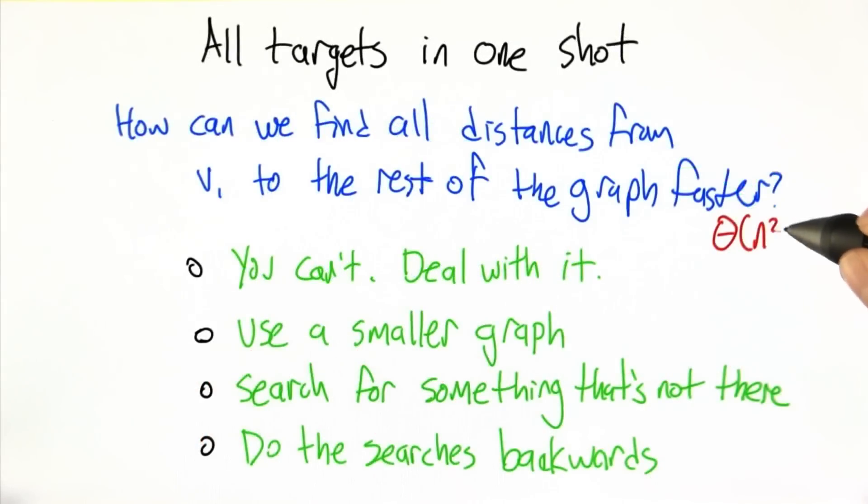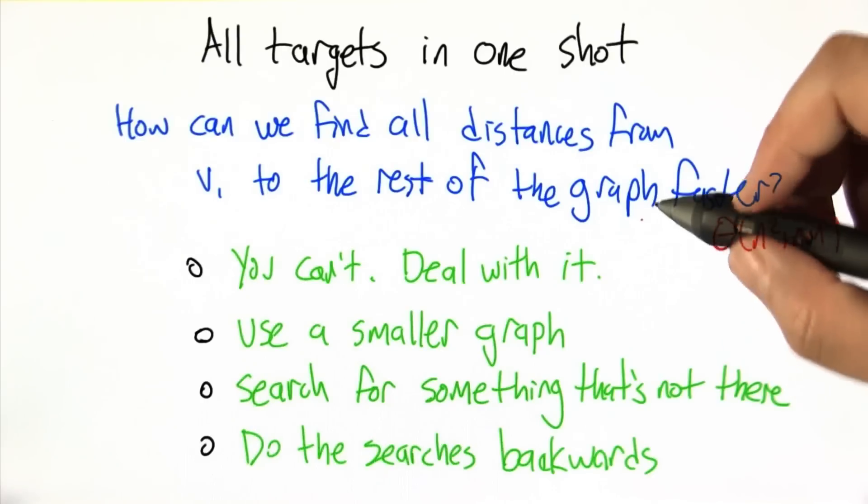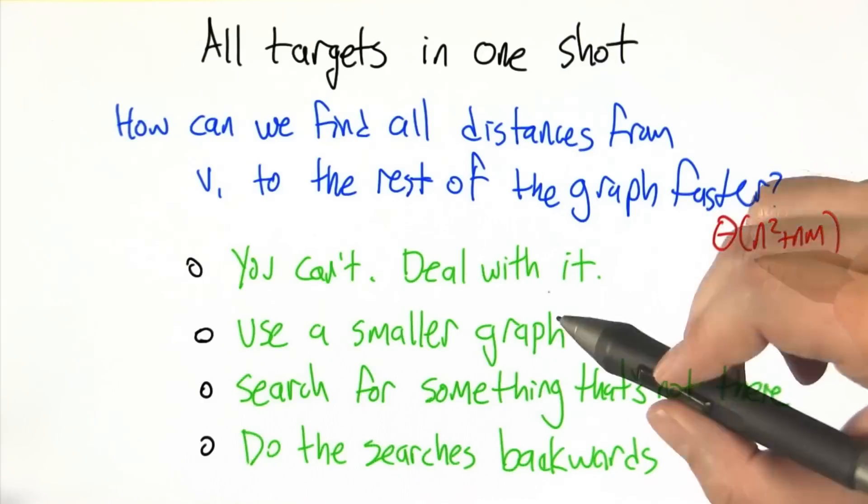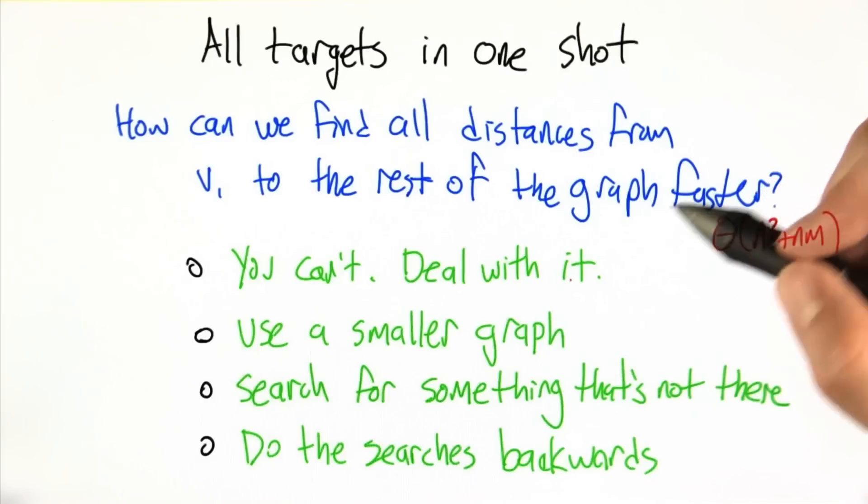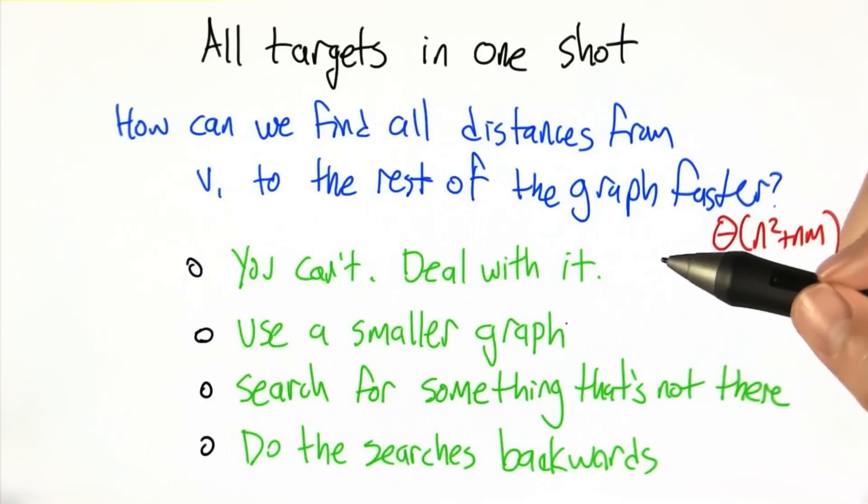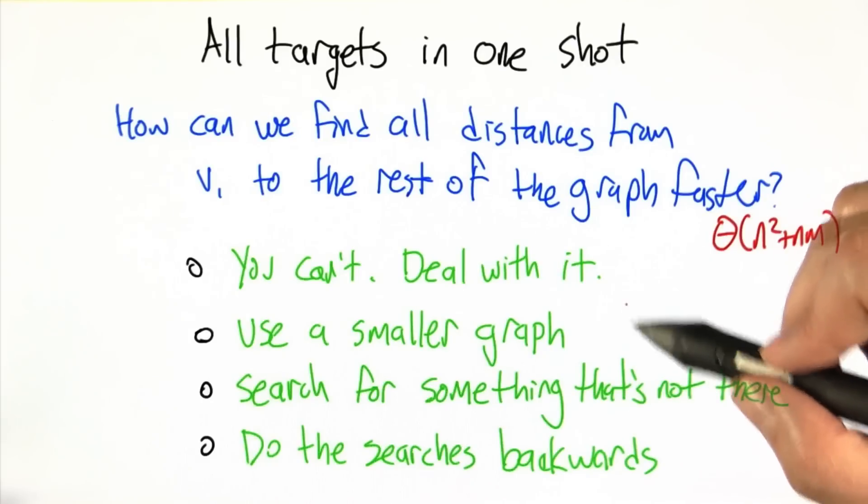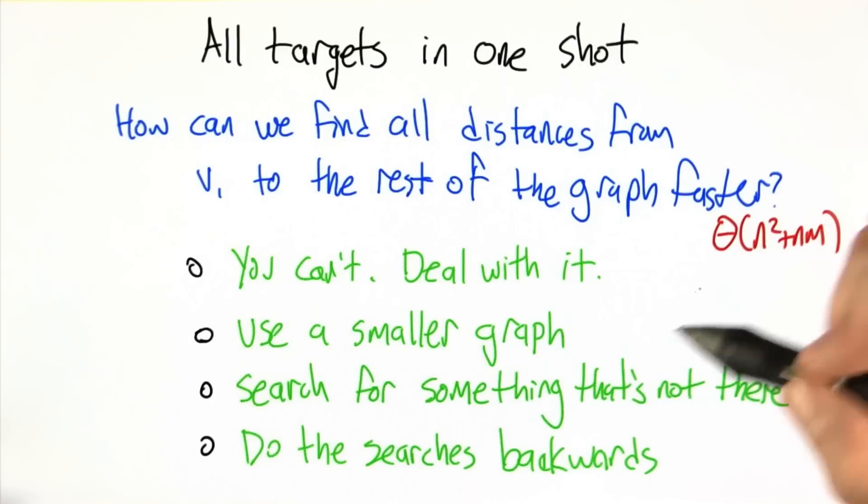So here's some choices for you. One possibility is you can't, just deal with it. I mean this is the fastest way to do it, which is essentially to repeat individual pairwise searches until you've exhausted all the nodes. Another possibility is you can make it faster by just using a smaller graph. Another choice would be, you're searching for V1—we're not sure what to search for—just search for something that's not anywhere in the graph. And last choice is actually you can speed things up by doing the search backwards.